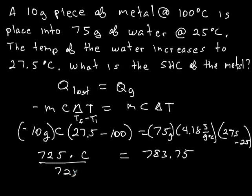Then divide by the 725. And C is equal to 1.08. Trust me on the units here, joules per gram degree Celsius. The units will all work out to the units of joules per gram degree Celsius in this case.